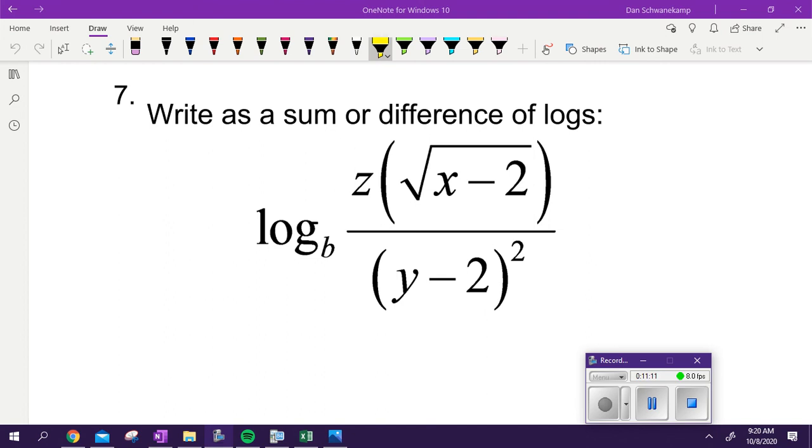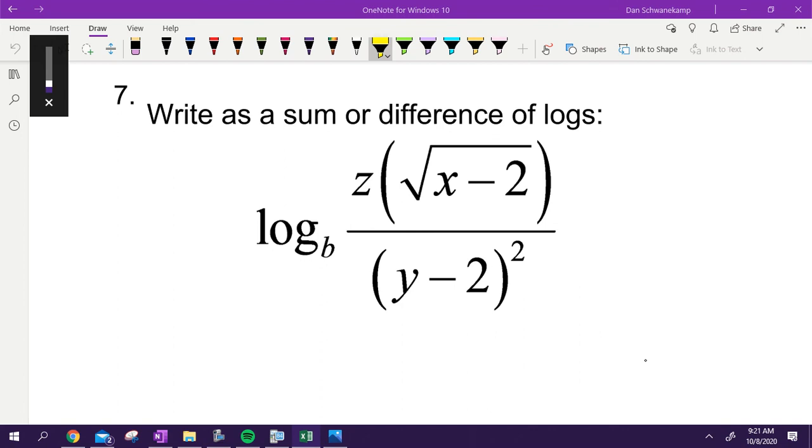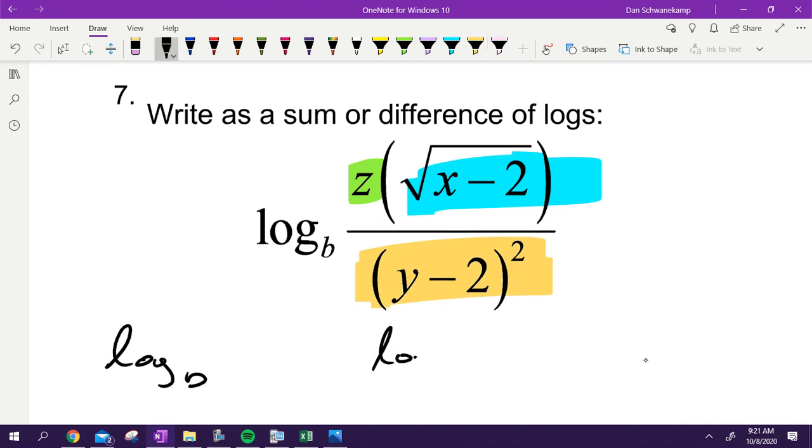All right, let's do a game. We are expanding, right? As a sum or difference of logs, which means you're writing a lot of little logs with plus or minus signs in between them, because that's what sum and difference means. Go. All right, so as we set this thing up, we're writing it as a sum and difference of logs. You got to figure out how many parts are there. How many parts are on this one? Three. I got one, I got two, I've got three. So make sure you write log base b three times.